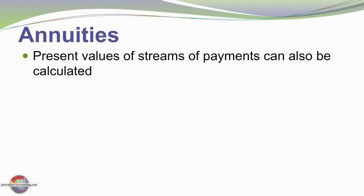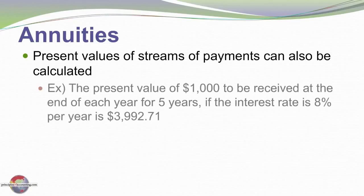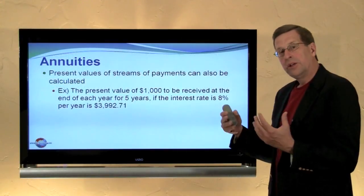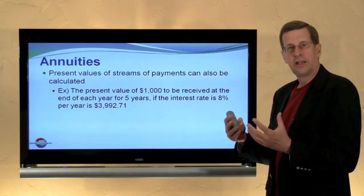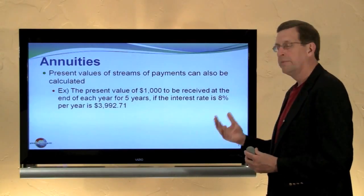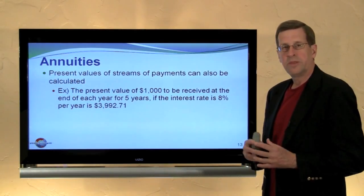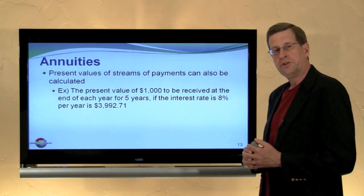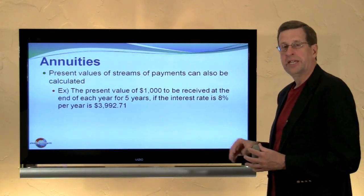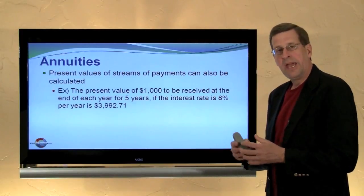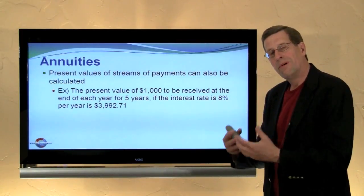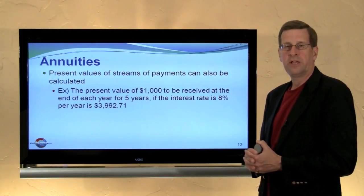The reverse of future value is present value, and we can also look at the present value of annuities. For example, $1,000 coming in each year for five years at an 8% interest rate has a present value of $3,992. It's very important to get your arms around present value and future value calculations — review the tables in the textbook. This topic is introduced in this chapter, and if you want more in-depth coverage, Chapter 24 provides a much deeper look at future value and present value calculations.